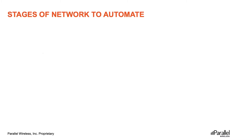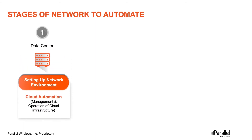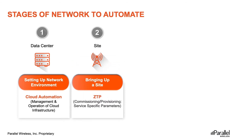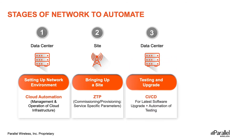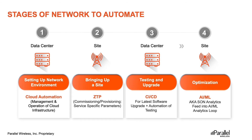There are four stages of network or service deployment where automation is needed. First, setting up the network environment or infrastructure, where cloud automation plays a key role. Second, bringing up the radio site through commissioning and provisioning, using Zero Touch Provisioning (ZTP). Third, testing and upgrades, where CI/CD plays a key role. Fourth, optimization using AI/ML for intelligent automated optimization of the network to provide best-in-class service to subscribers.